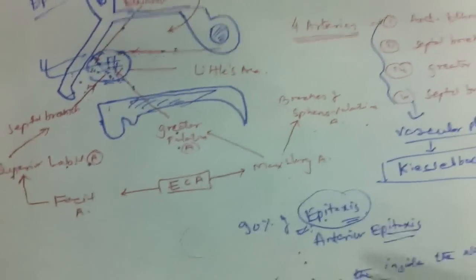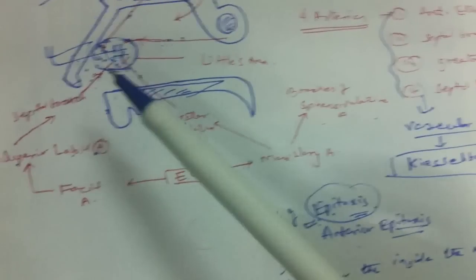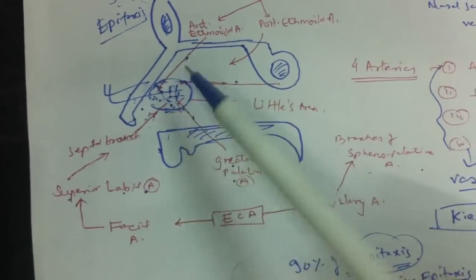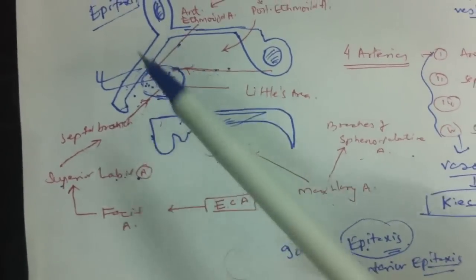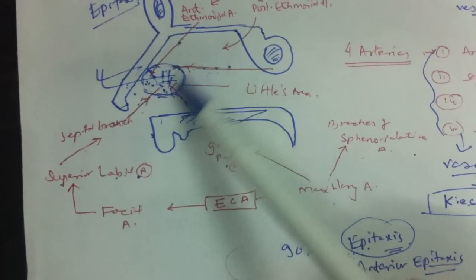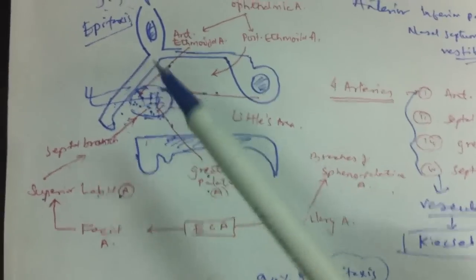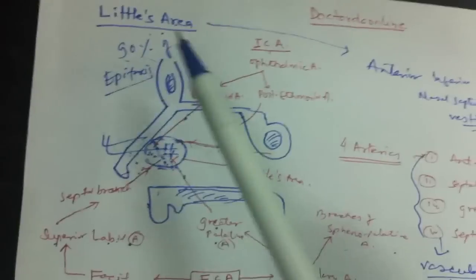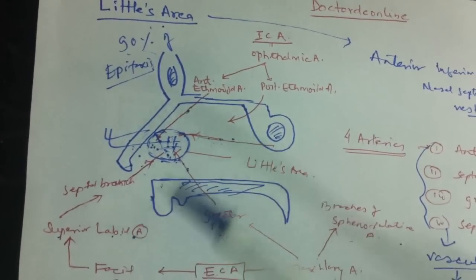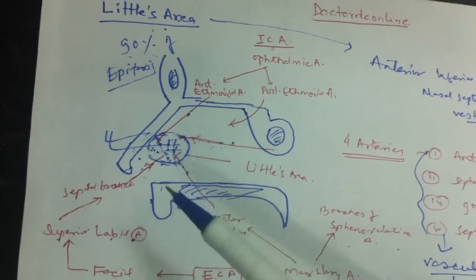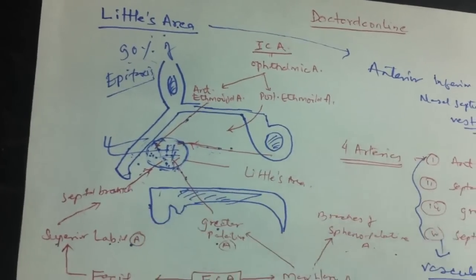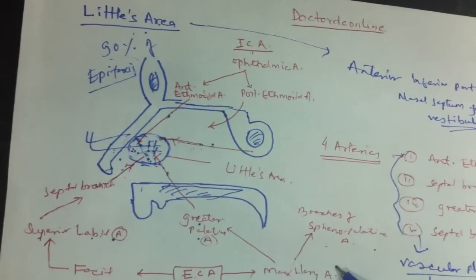It is called anterior epistaxis because Little's area lies in the anterior inferior part of the nasal septum, which is the most common place for epistaxis, for bleeding. So this Little's area is very important to diagnose and to understand this anatomical structure for treatment purposes as well.